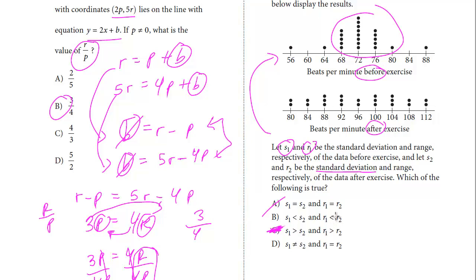Then the range. Now if you look at the range, this one is from 56 to 88. So this one has a range of 22. This one's from 80 to 112. That's also 22. I probably would have started with the range.